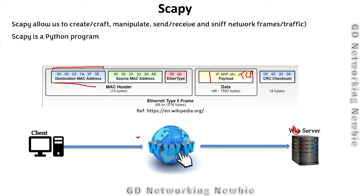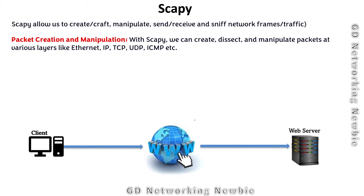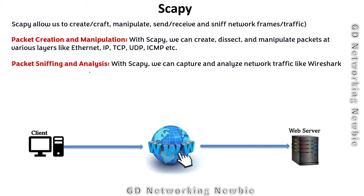We can create packets of our own, manipulate them, send and receive packets, and also monitor or sniff network traffic. As per the definition, with Scapy you can create, dissect and manipulate packets at various layers like Ethernet, IP, TCP, UDP, and ICMP. Each of these layers has different fields with values we can create and manipulate.